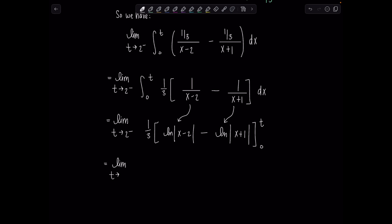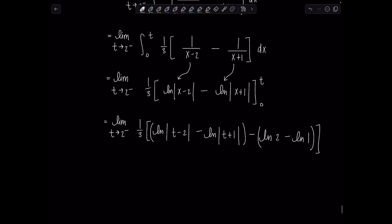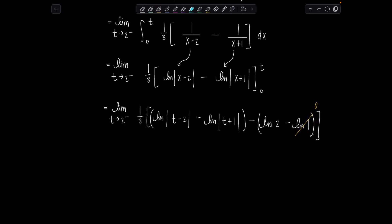So limit t approaches 2 from the left, 1 third. This is going to be natural log absolute value t minus 2. I'm plugging in the upper limit. Minus natural log absolute value t plus 1. Minus, now our lower limit, natural log. If I have absolute value of 0 minus 2, then that's just natural log of positive 2. Minus natural log, and then 0, 0 plus 1, that's just going to be 1. Natural log of 1, that's just 0. So that's gone. All right, so now let's work on evaluating the limit.